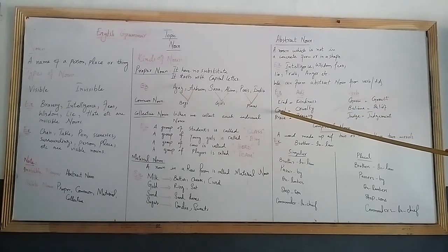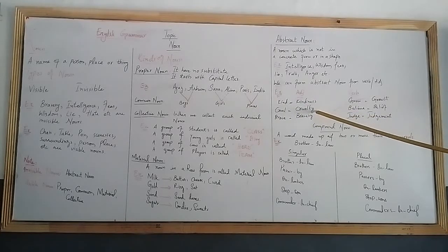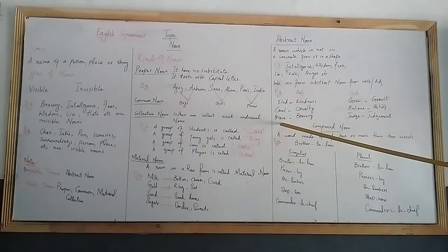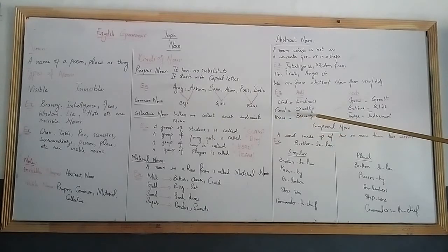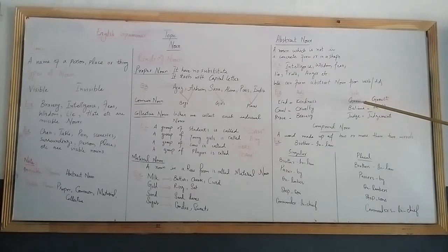Verbs can also change to abstract nouns. Grow changes to growth. Believe changes to belief. Judge changes to judgment. This is how you change verbs and adjectives into abstract nouns.